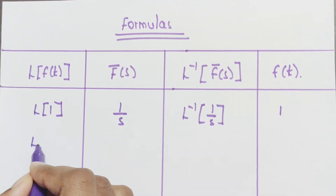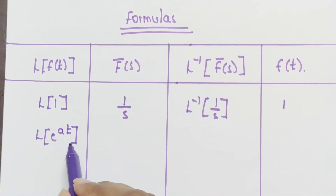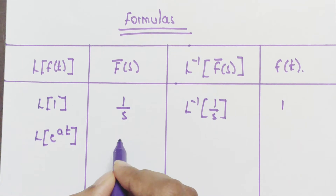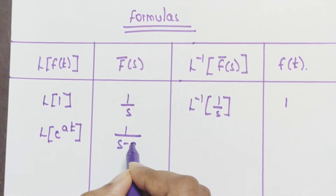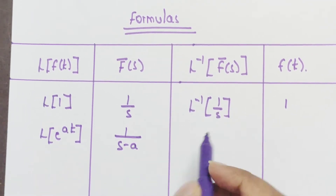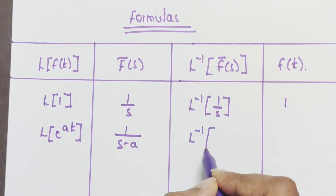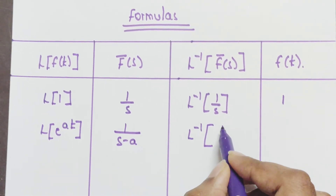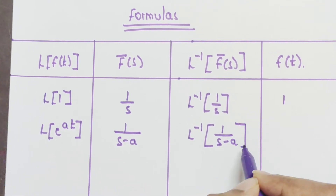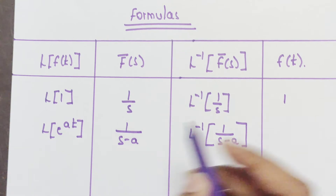Next, Laplace of e^(at). We know the formula of Laplace of e^(at) is 1/(s − a). So applying the inverse Laplace transform to 1/(s − a), the answer is f(t) = e^(at).